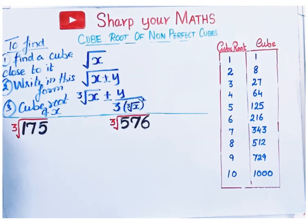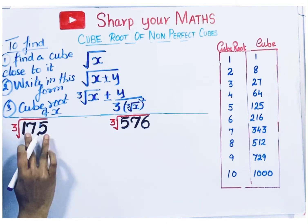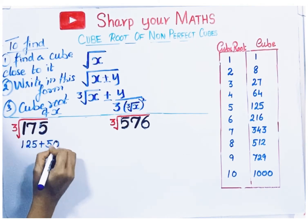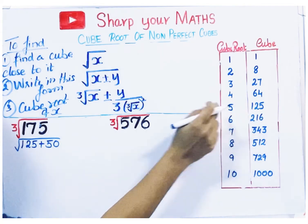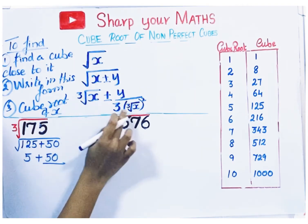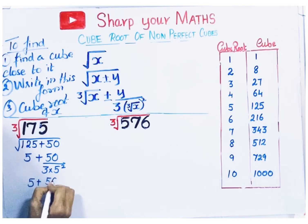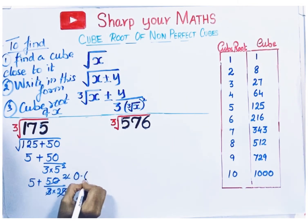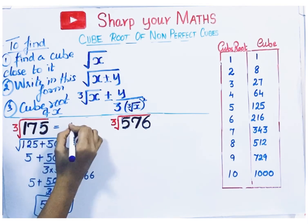Next is the cube root of a non-perfect cube. To find the cube root of 175: check the cube closest to it, which is 125. Write 175 as 125 plus 50. The cube root of 125 is 5. So the cube root of 175 is approximately 5 plus 50 divided by (3 times 5 squared), which is 5 plus 50 divided by 75, giving 2 by 3, which is 0.66. So the cube root of 175 is approximately 5.66.